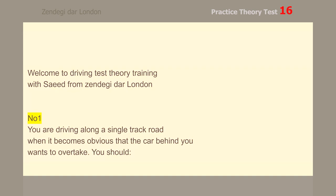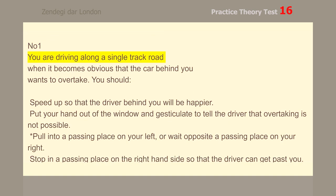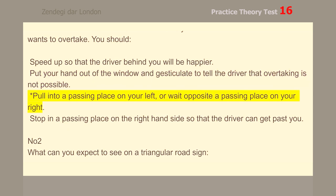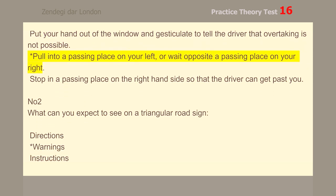Number 10. You are driving along a single track road. When it becomes obvious that the car behind you wants to overtake, you should pull into a passing place on your left or wait opposite a passing place on your right.